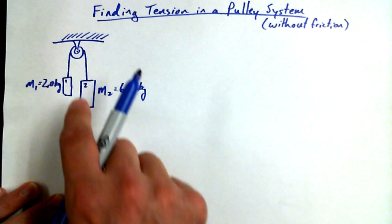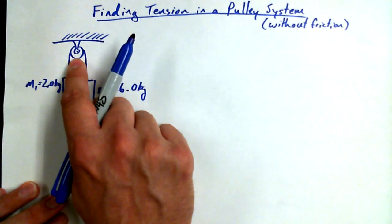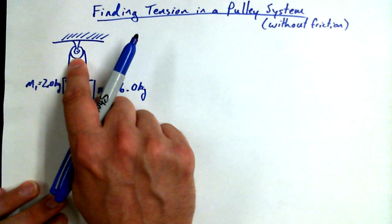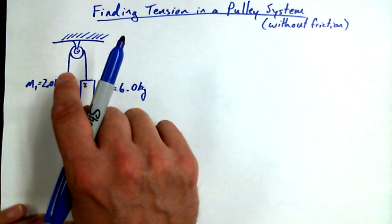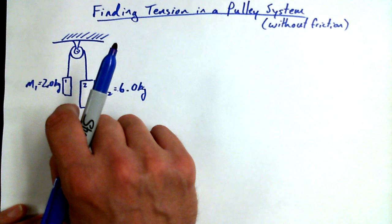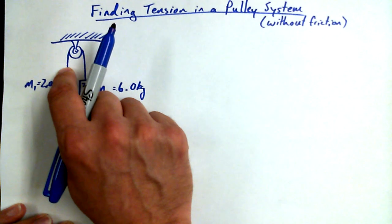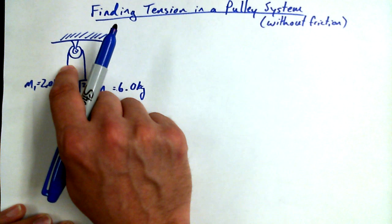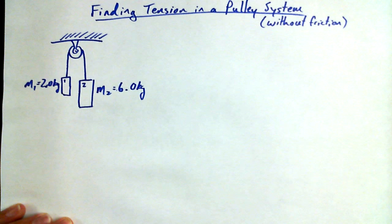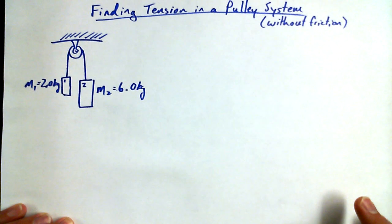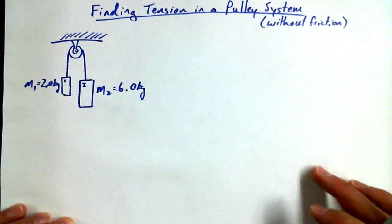The pulley is going to be frictionless but also massless. If the pulley had mass it would have some rotational inertia that would impact the results. We're also going to say the string is massless and not stretchable. The air is non-existent, this is happening in a vacuum so there's no air drag.